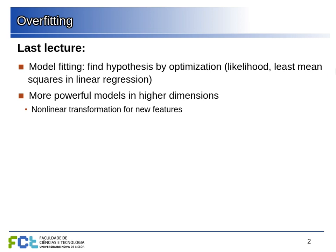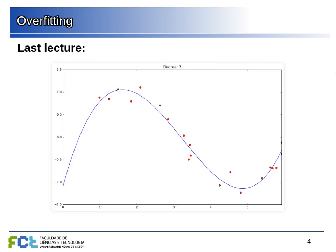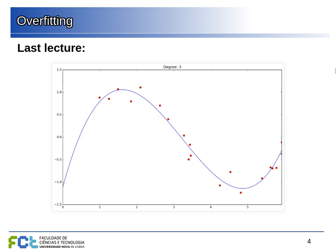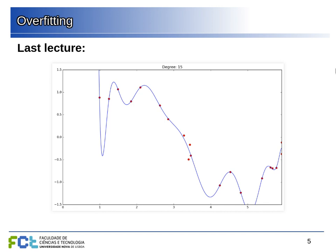We saw that we can increase the power of our linear model by transforming the data into higher dimensions using non-linear transformations. We start with x, add x-squared and x-cubed, and so on. Each time we do that we increase the power of the hypothesis space. This allows us to go to higher-degree polynomials — a single line, then quadratic, cubic, degree 15, whatever we want.